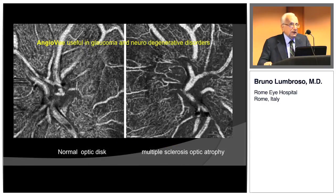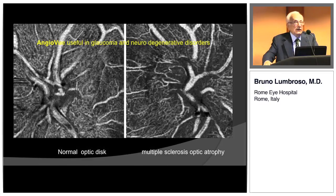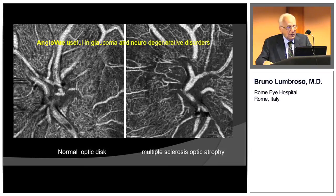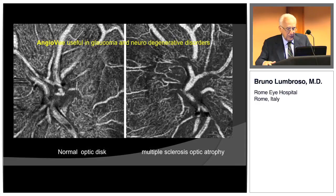AngioView is not useful only for retina — it is very useful for glaucoma. Here are two images of optic discs, and Dr. Puech will provide many more images. We will see that in glaucoma and in neurodegenerative disorders, there are important changes in the capillary network.